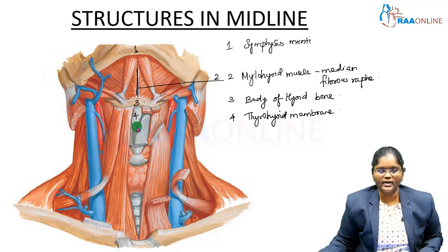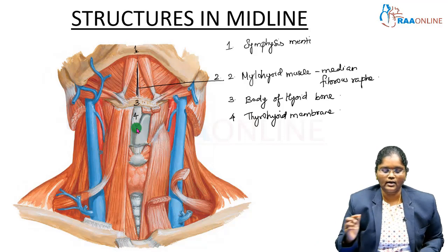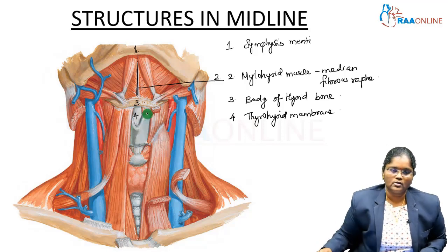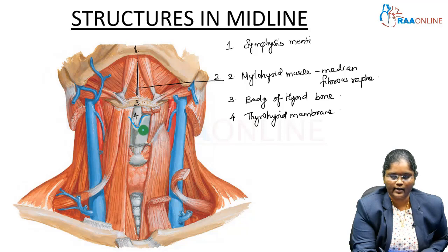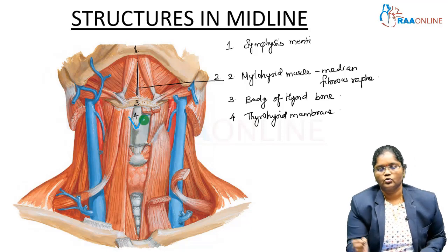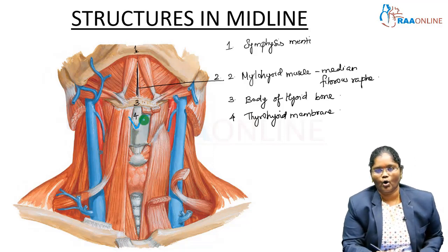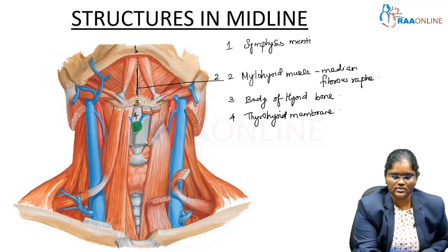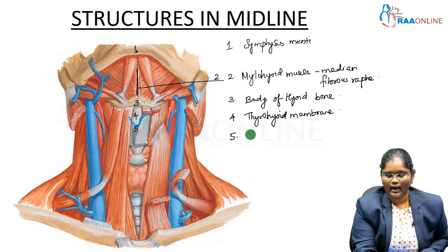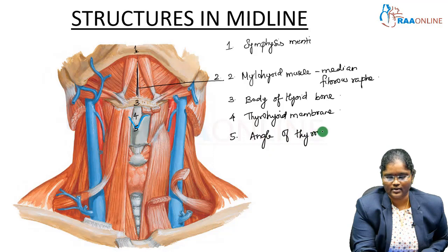The next prominent structure in the midline, just below the thyrohyoid membrane, is the upper border of the thyroid cartilage. The thyroid cartilage has two laminae that meet in the middle and create an elevation — this elevation is called the laryngeal prominence, or Adam's apple. The number five marks the angle of the thyroid cartilage where the two laminae meet.